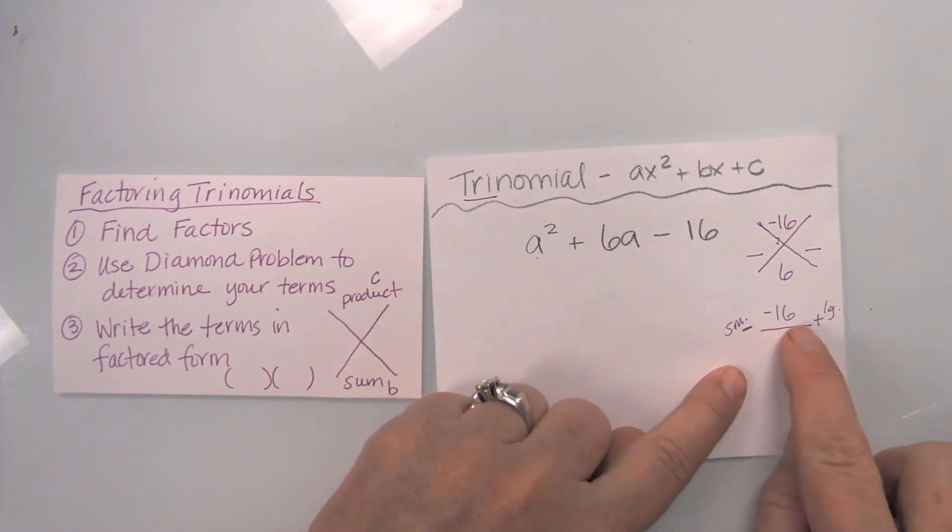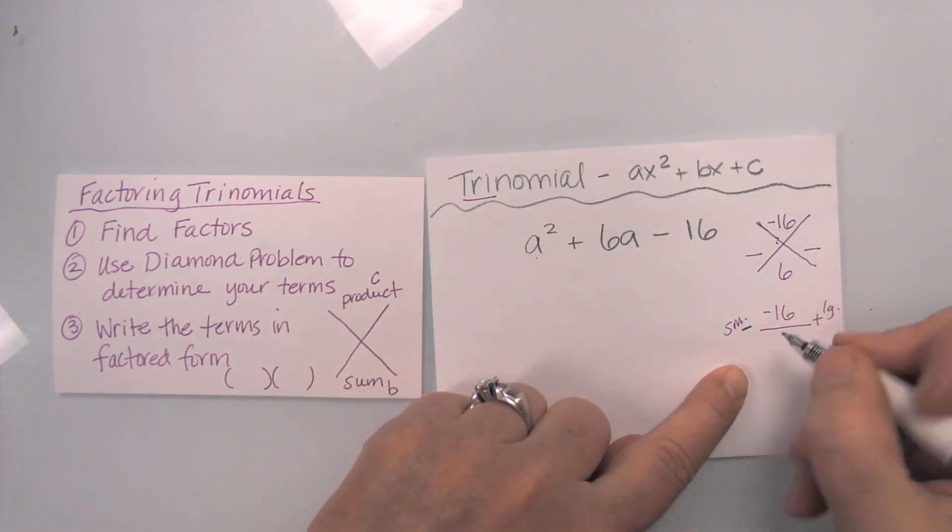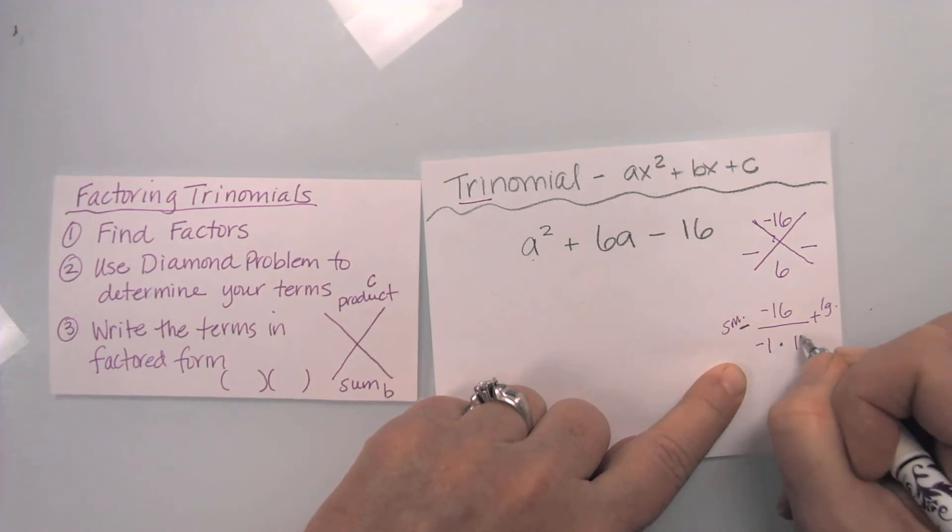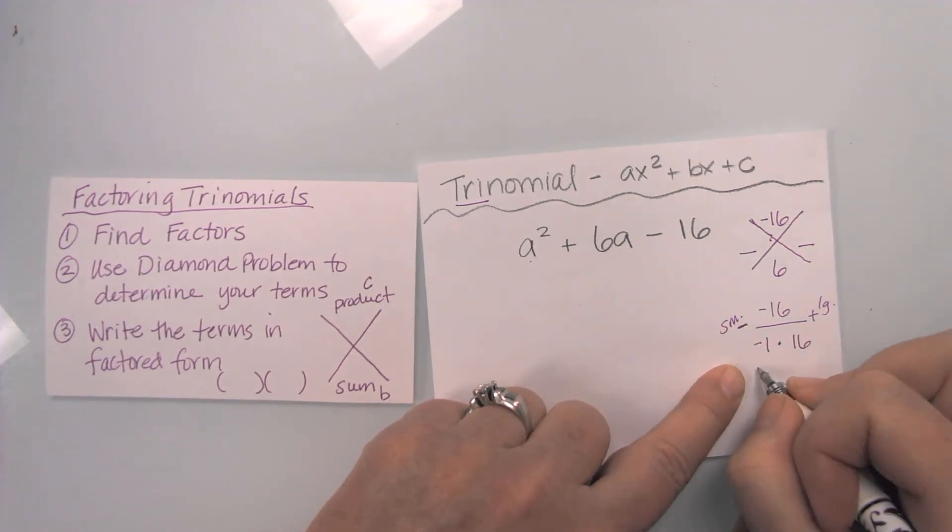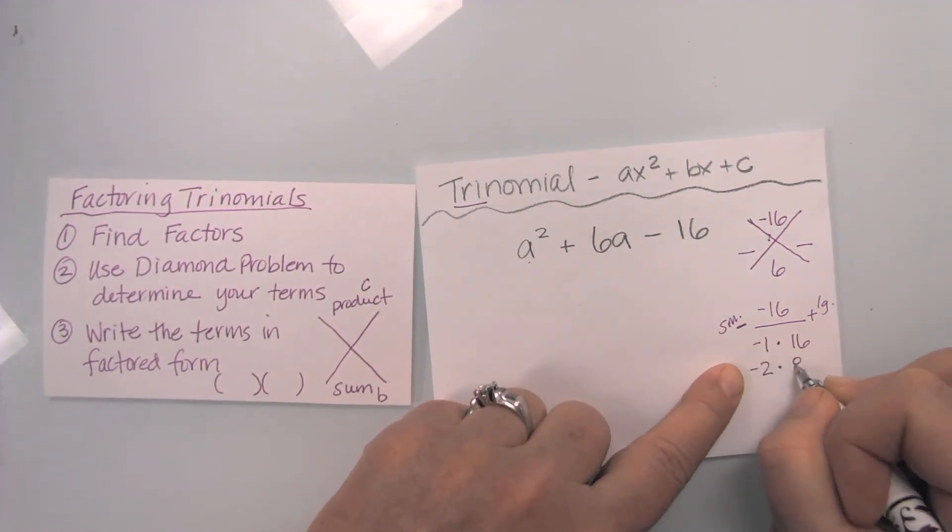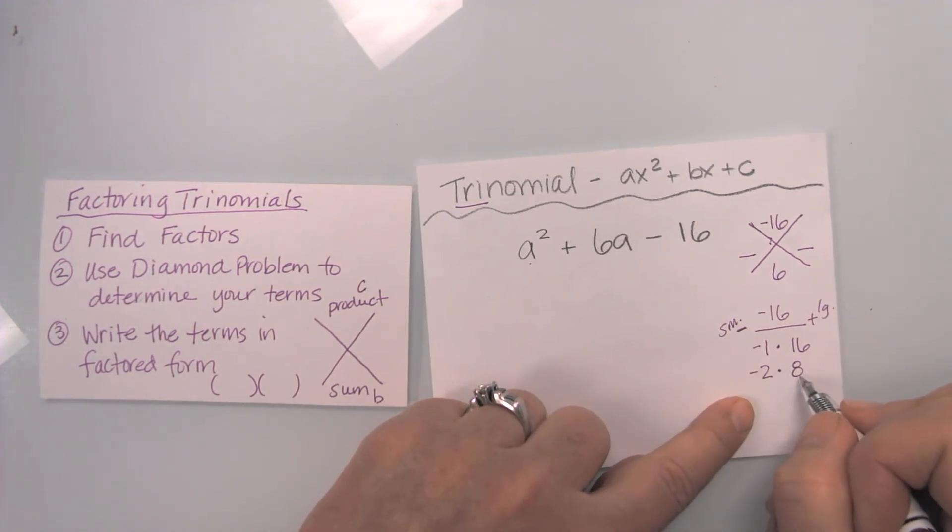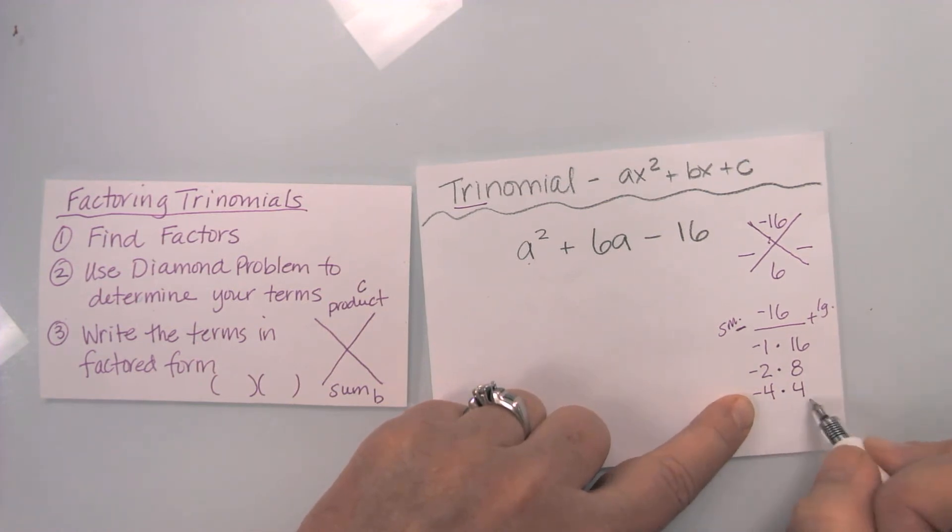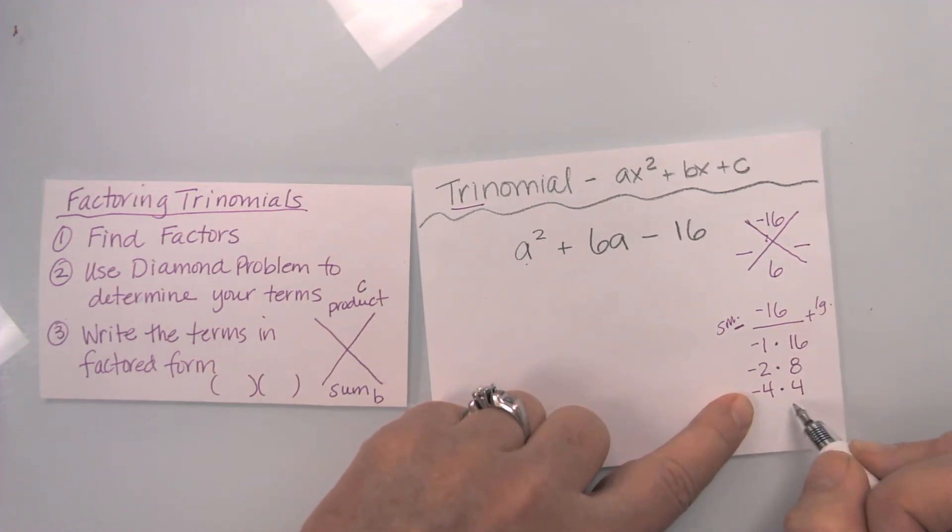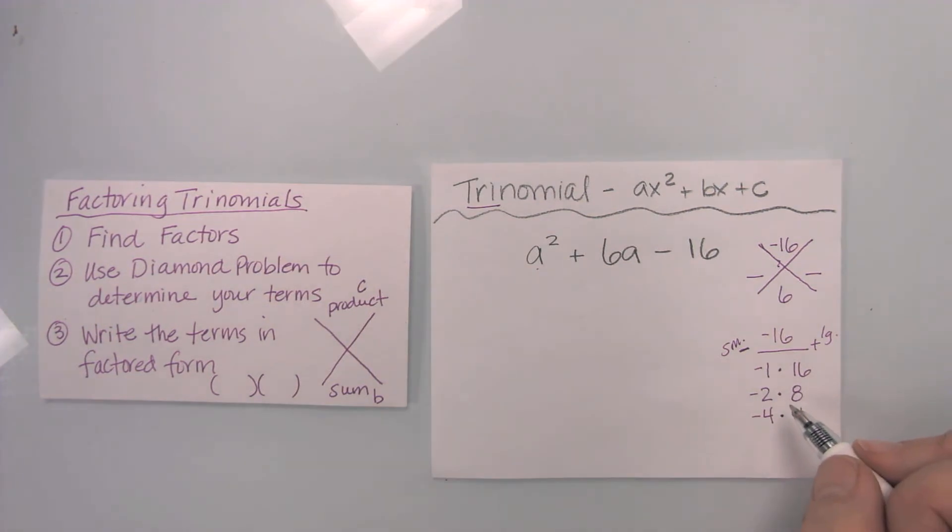So what equals a negative 16? Well, I know negative one times 16, I know negative two times eight. Three does not go in. Four goes in, so I can have a negative four times a positive four. And since I have two numbers next to each other, I know that I am done finding my factors.